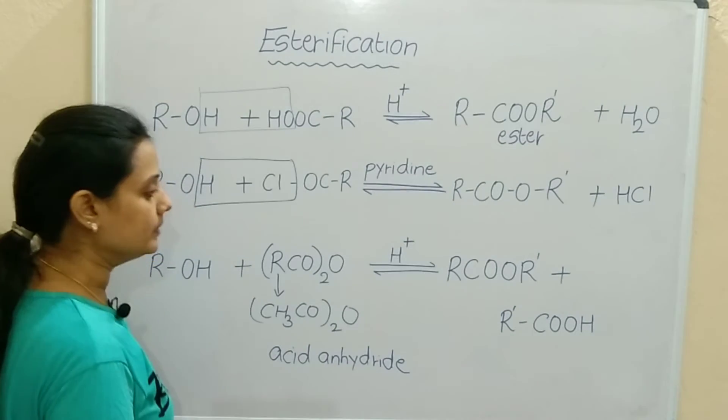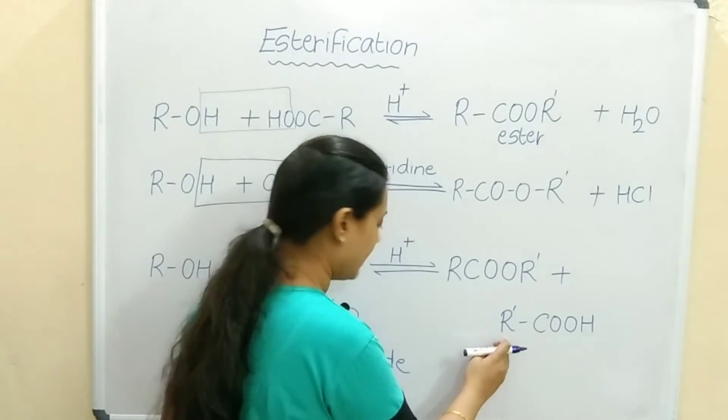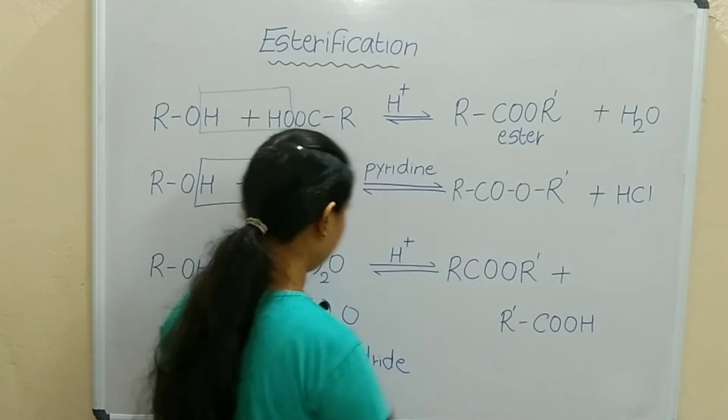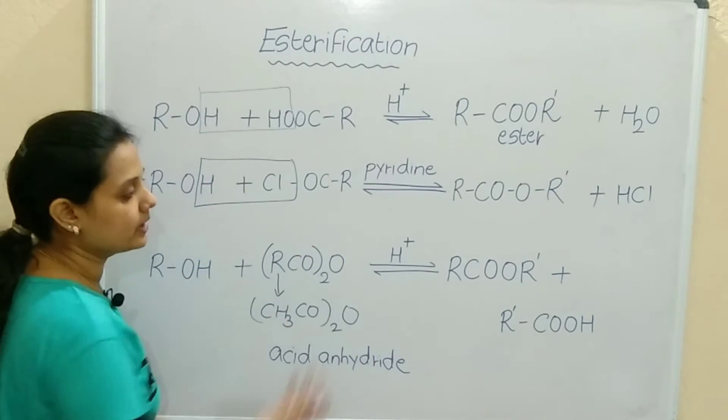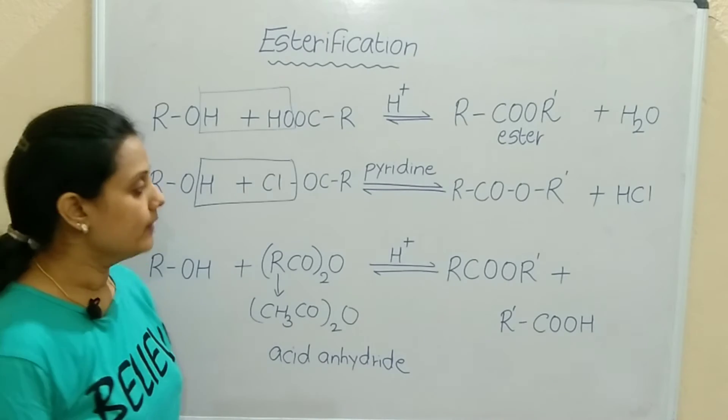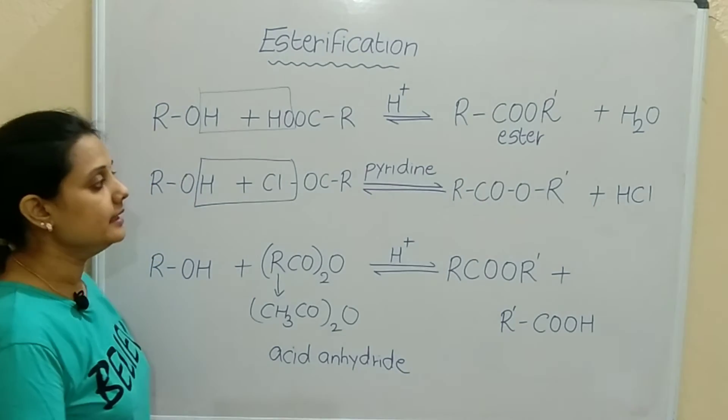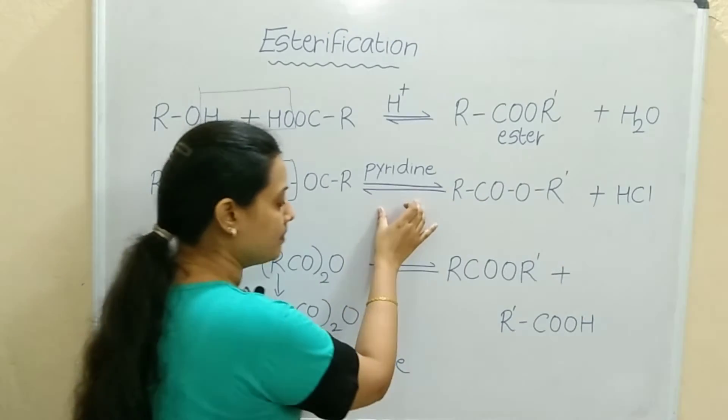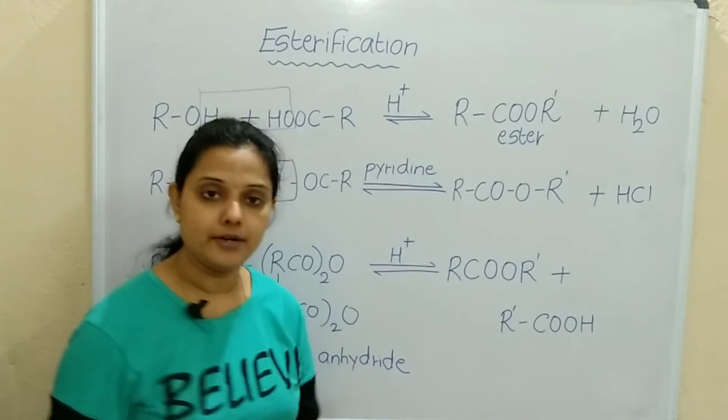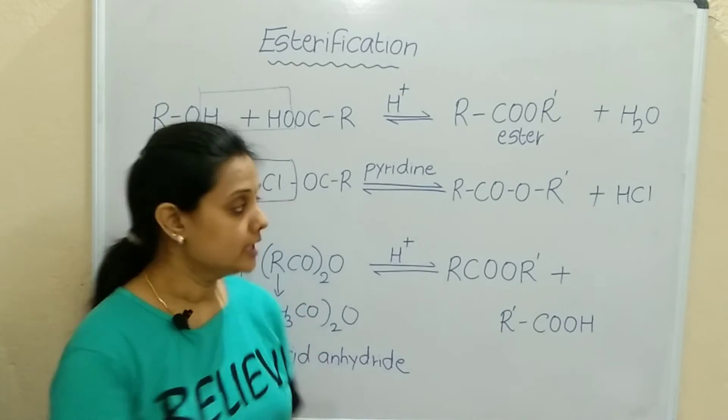What will it form? The byproduct will be R-COOH and the main product will be ester. Why are we using pyridine here? Because pyridine is a basic compound and in the product hydrochloric acid is produced, just to neutralize we are using pyridine.